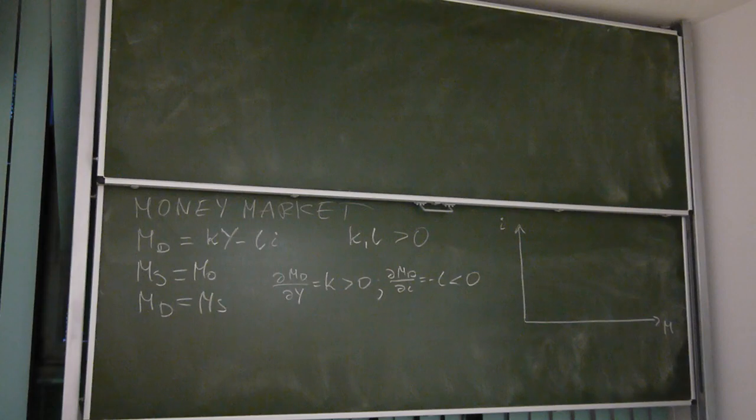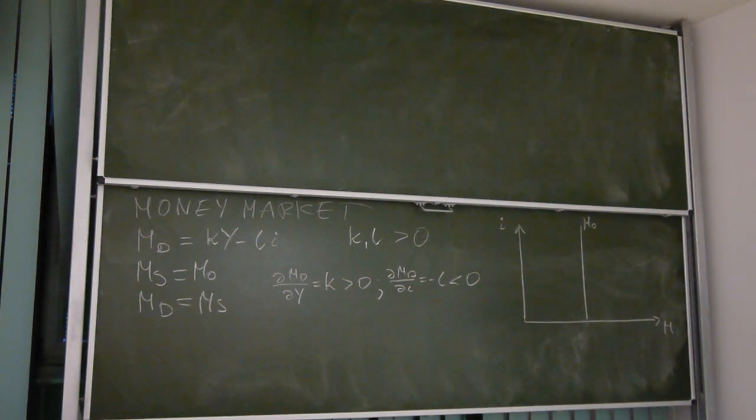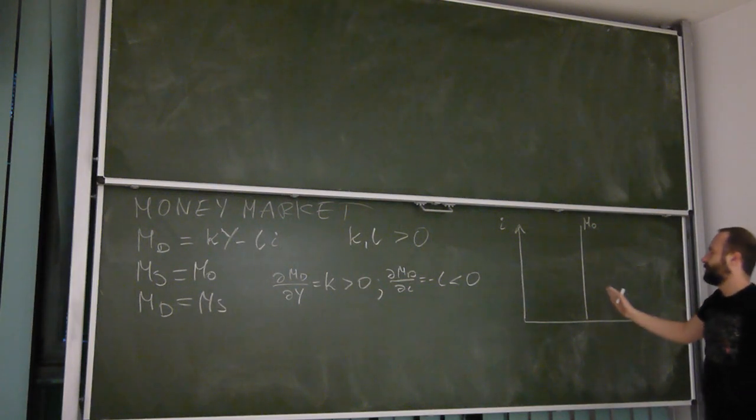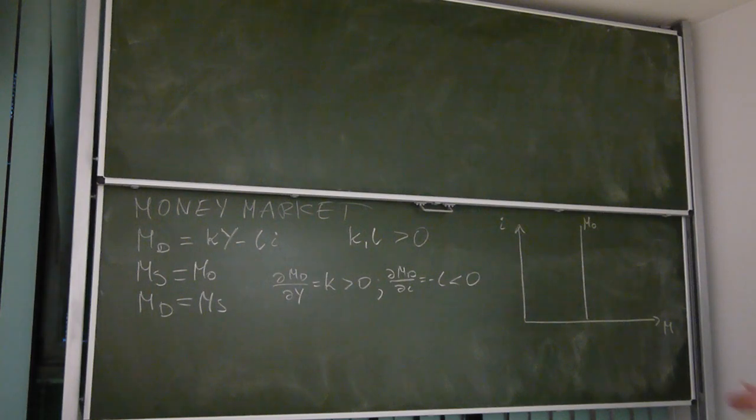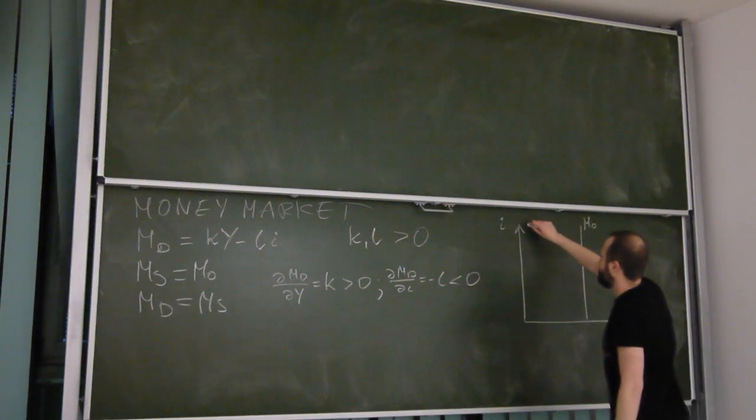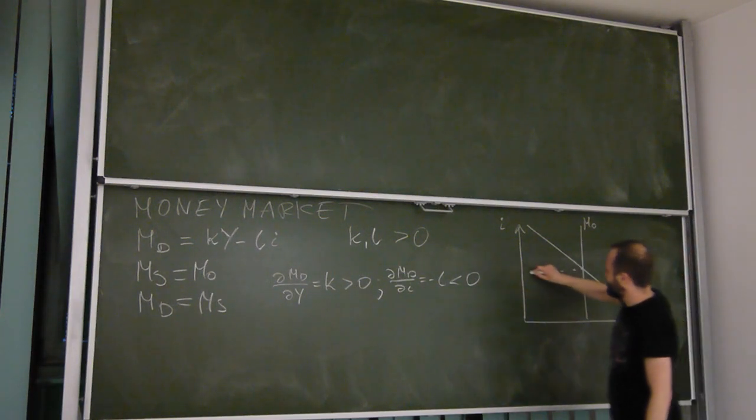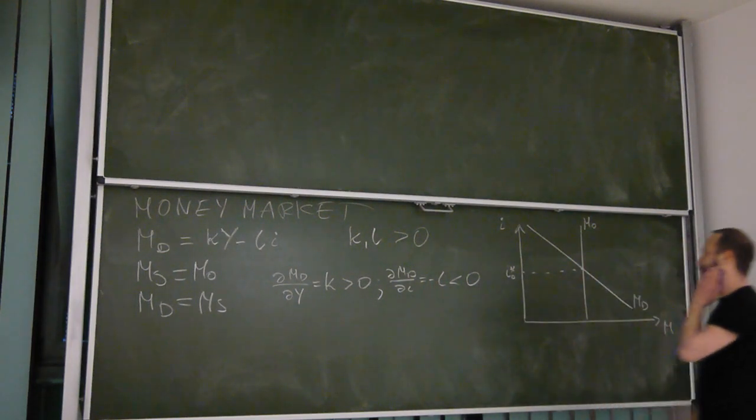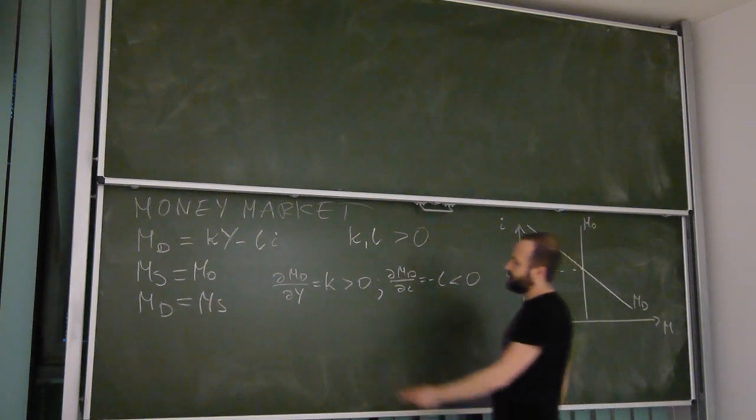So let's just put this relationship on the graph. If here we have interest rate, so the price of money, and here we have the quantity, which is the amount of money in the economy, money supply is this M0 curve. The bigger is the money supply, the bigger will be the money supply. This is a vertical line because we said it is exogenous, it is set up by the central bank. And now the bigger is the money supply, the further to the right this curve is going to lay. Then we know that the relationship between interest rate and money demand is negative and linear, so we can draw it like this.